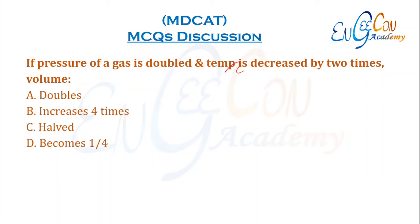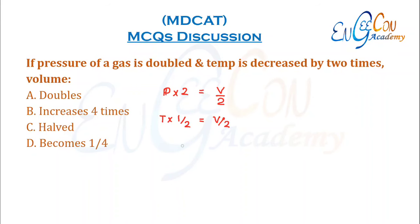If pressure of a gas is doubled and temperature is decreased by two times, what happens to the volume? If pressure is doubled, volume decreases by two times (inverse relationship). If temperature is halved, volume is again halved. Overall, the volume becomes one-fourth of the original.